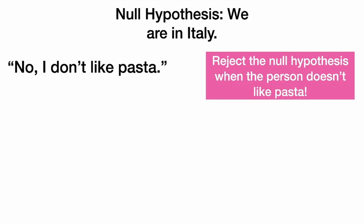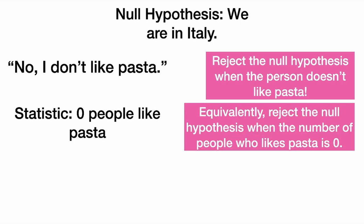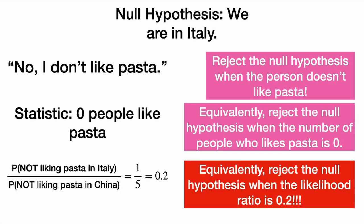So our null hypothesis is that we are in Italy, and we collect some data. The person says no, I don't like pasta, and we reject the null hypothesis when the person doesn't like pasta. Data is more often numerical, so we might represent this as a statistic: zero people out of the one that we asked like pasta. We reject the null hypothesis when the number of people who like pasta is zero. We're also going to base decisions on likelihood ratios — the likelihood ratio was 0.2 — so we reject the null when the likelihood ratio is 0.2.